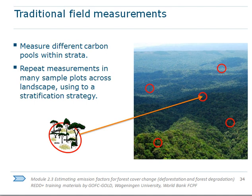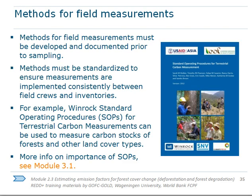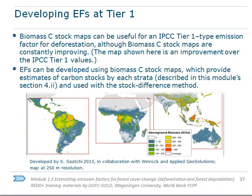After deciding which carbon pools to measure and defining the sampling strategy — number and location of samples — the next step is to conduct the field campaign and acquire field measurements. Since the goal is to estimate the emission factor (the change of carbon stock), field measurements may differ from those in a traditional forest inventory. It is therefore necessary to use specific field manuals and protocols for estimating emission factors, such as the detailed manual by Winrock International shown in the slide.